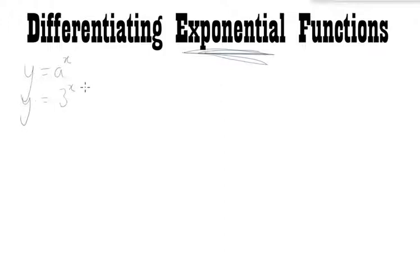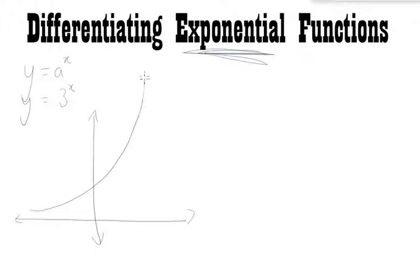Exponentials are equations with the form y equals a to the power of x, where a is normally some positive number. For example, y equals 3 to the power of x. Drawing a rough sketch of that, it's going to look something like this — this is my graph of y equals 3 to the power of x. Exponentials generally pass through 1, and here it goes through the point (1, 3).